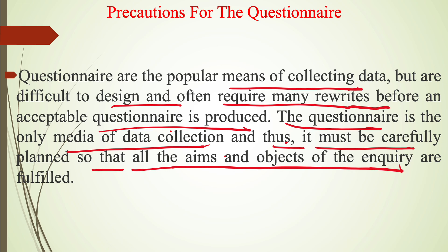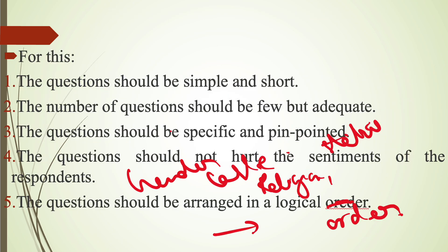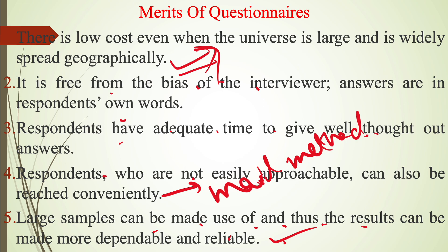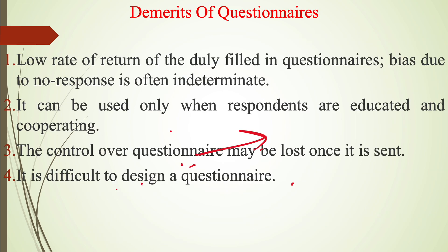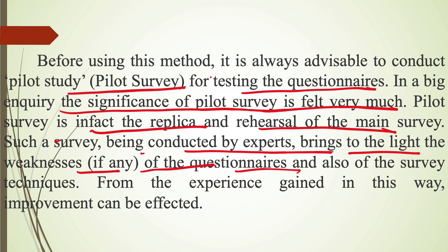Precautions for the questionnaire: it should be rewritten until acceptable, simple and short, specific, and not related to particular sentiments of respondents. Merits include reaching large populations at low cost, being free from bias, and giving respondents adequate time. Demerits include low rate of return, requiring educated and cooperating respondents, and difficulty of design. Finally, it is very important to conduct a pilot survey before finalizing the questionnaire, as it is a rehearsal of the main survey.